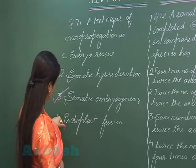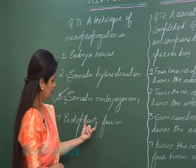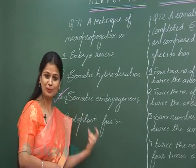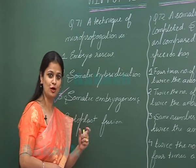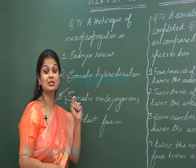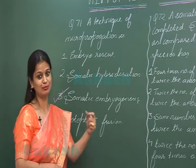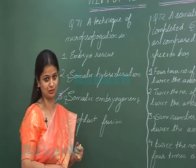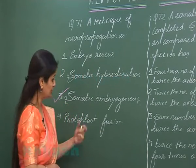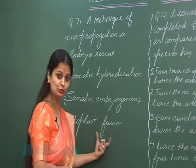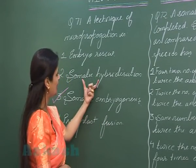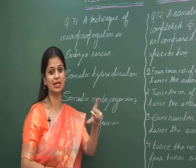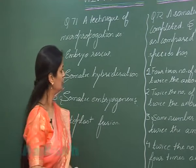Protoplast fusion is done to form a hybrid protoplast. This hybrid protoplast can then be used for the formation of a complete plant through tissue culture. The hybrid formed through tissue culture is called a somatic hybrid, and this technique is known as somatic hybridization.